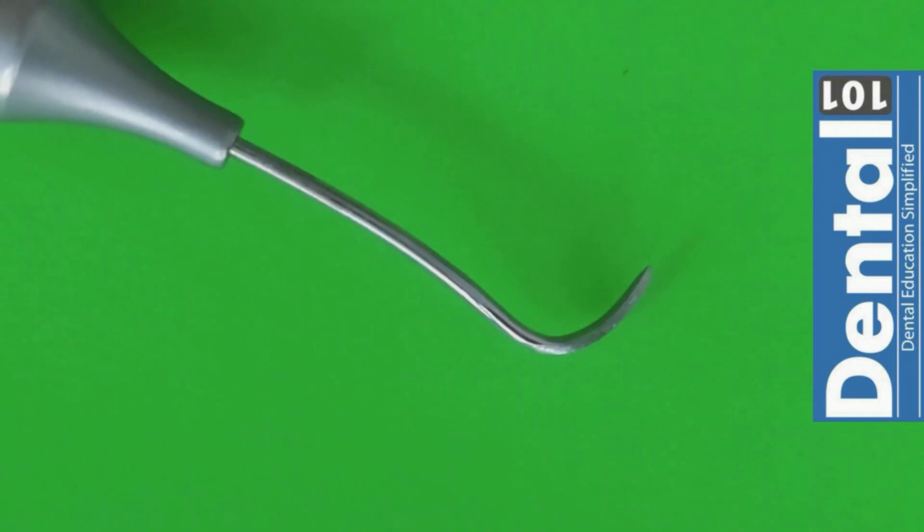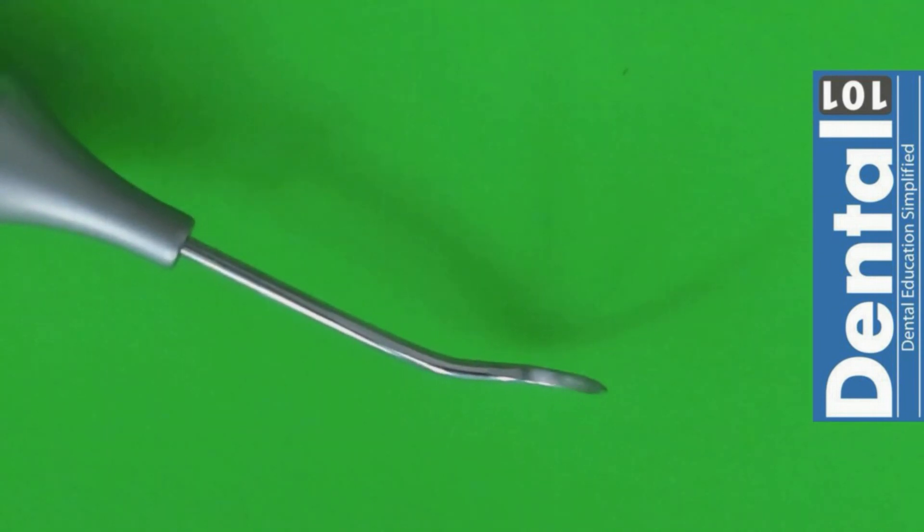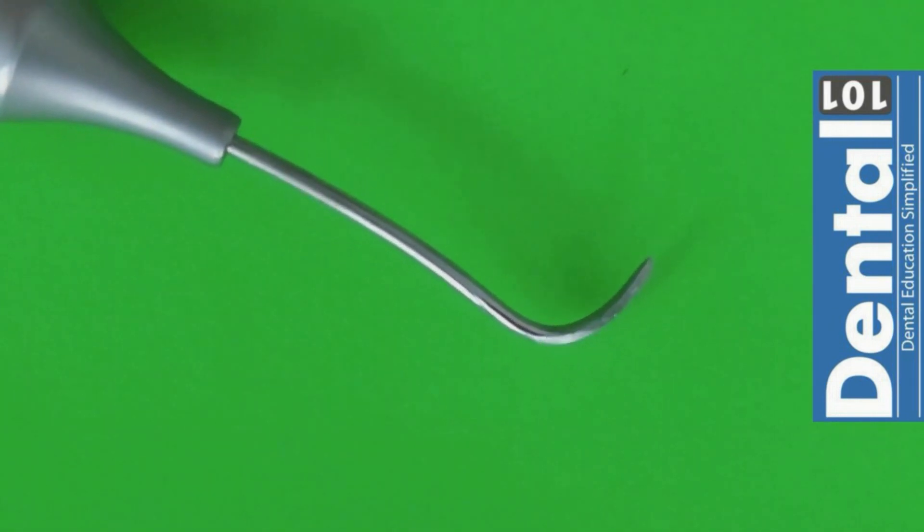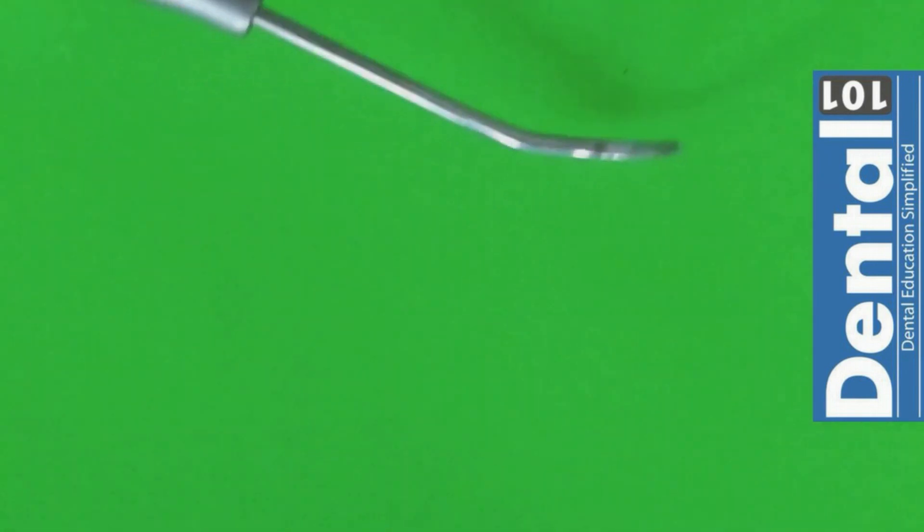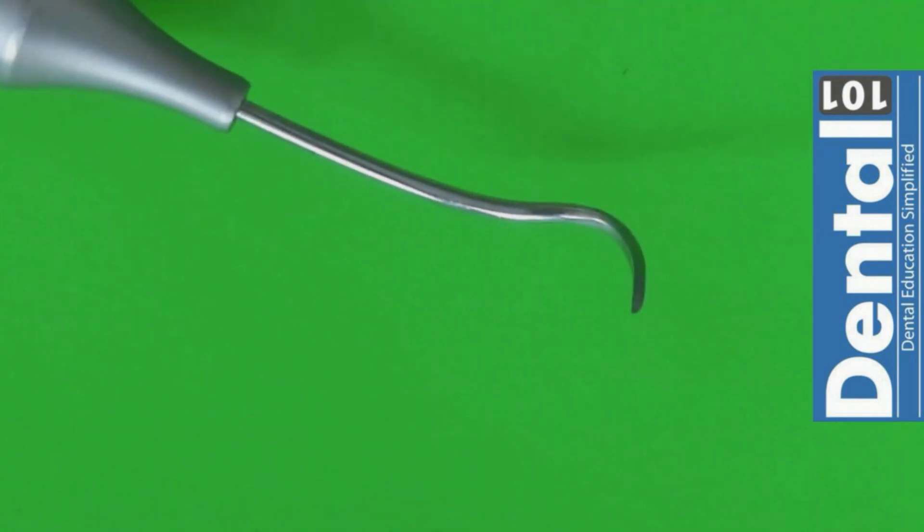Now we have the Whelan carver which is basically used for adapting interproximal surfaces for amalgam or composites so you can identify if you are having any kind of overhangs or excess. The Whelan carver is going to help you reach those places that are difficult to reach with other instruments.